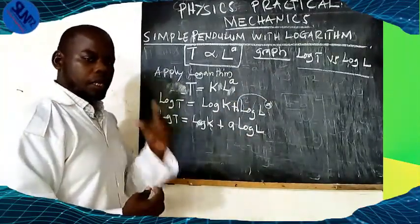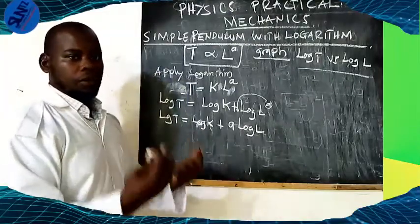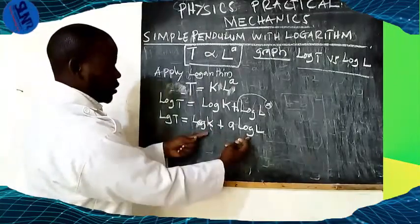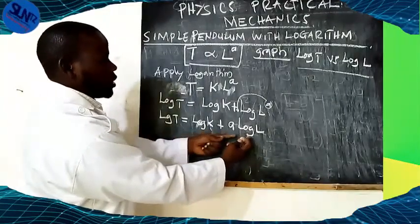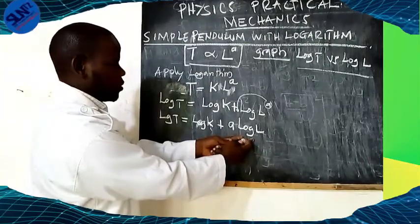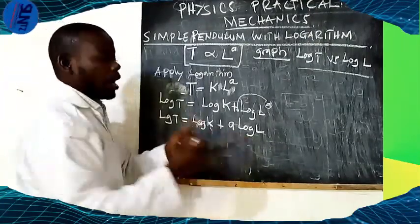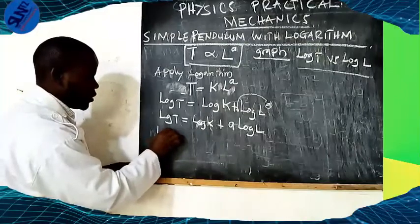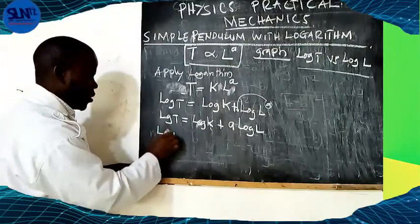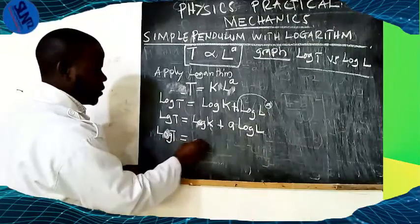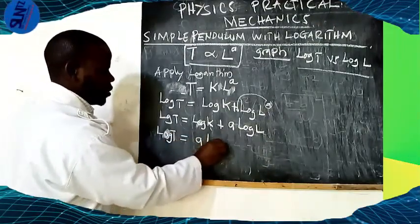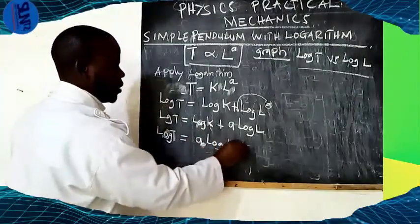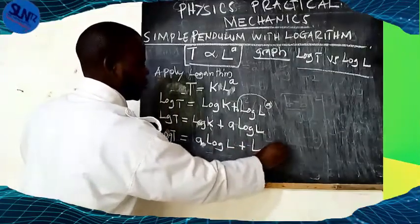Since our graph is log T against log L, we have to arrange this equation and compare it with the linear equation to see the nature of the graph. Rearranging: log T equals A·log L plus log K.